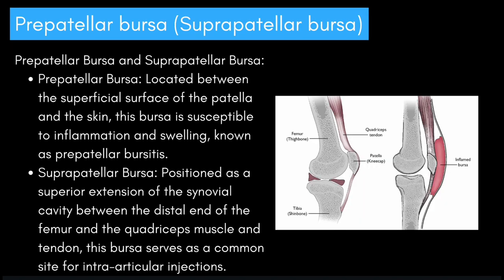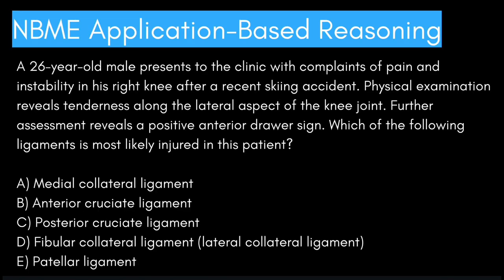Next, I'd like to talk about prepatellar bursa and suprapatellar bursa. The prepatellar bursa is located between the superficial surface of the patella and the skin; this bursa is susceptible to inflammation and swelling known as prepatellar bursitis. The suprapatellar bursa is positioned as a superior extension of the synovial cavity between the distal end of the femur and the quadriceps muscle and tendon, and serves as a common site for intra-articular injections.